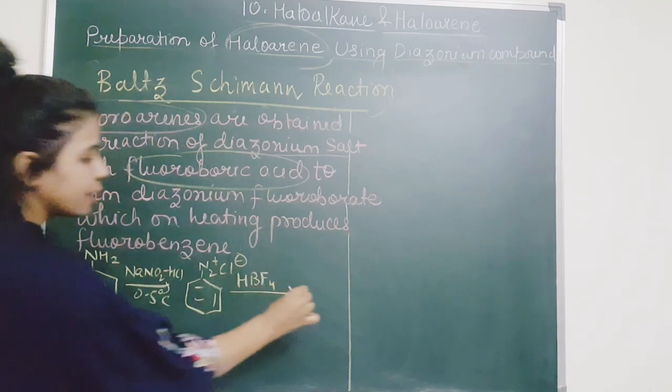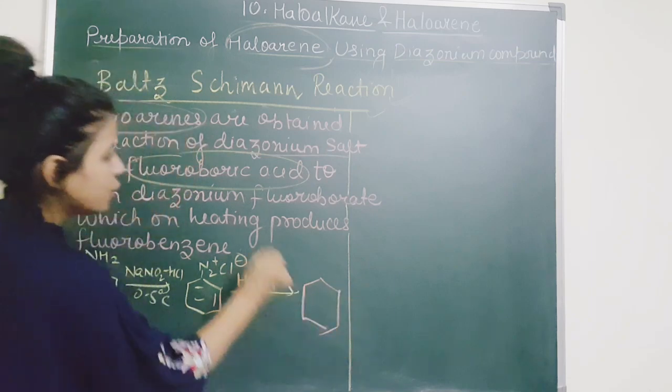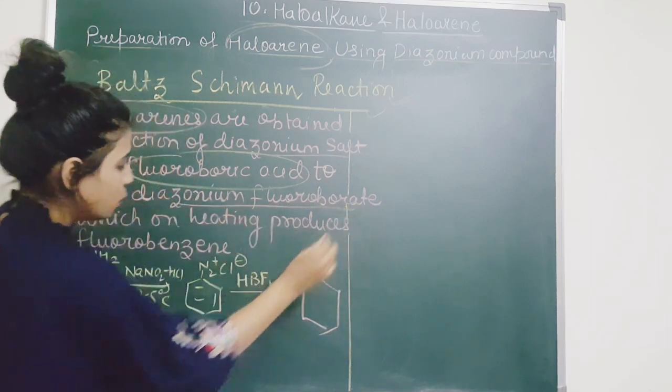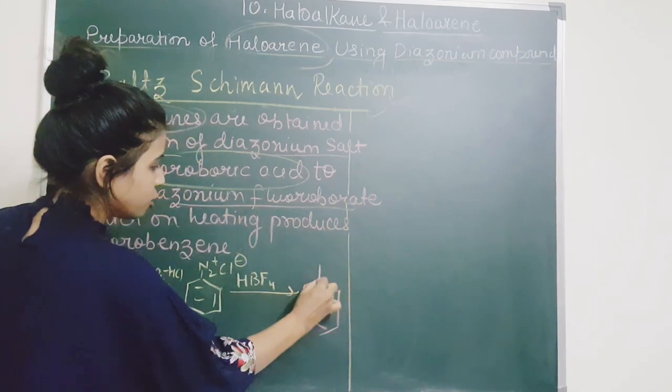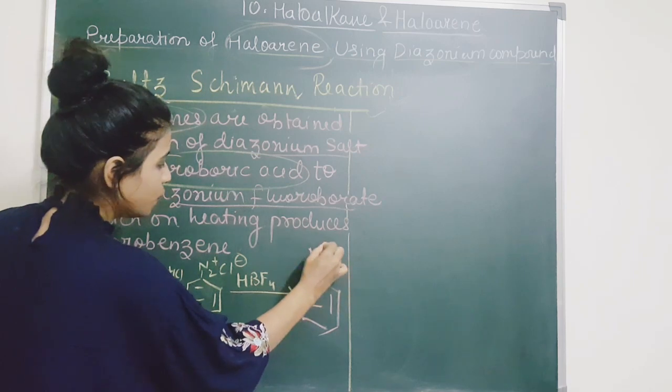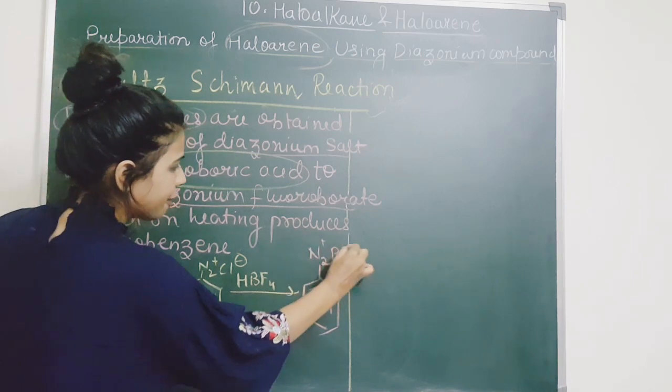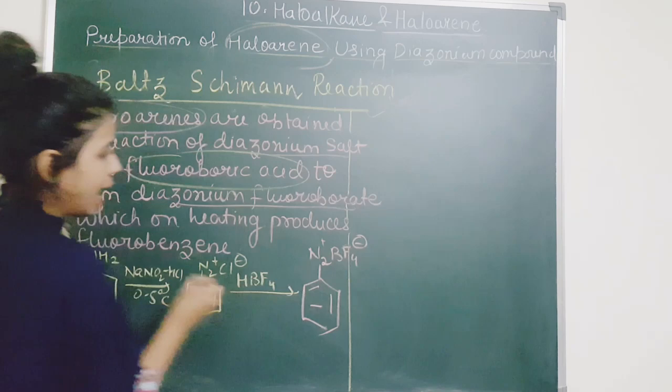Fluoroboric acid se treat karoge to aapko kya milega? You are going to get diazonium fluoroborate. So here you are getting N2+ BF4-. And what next?